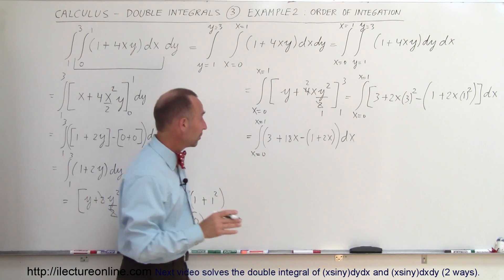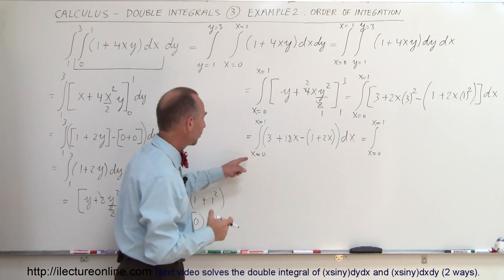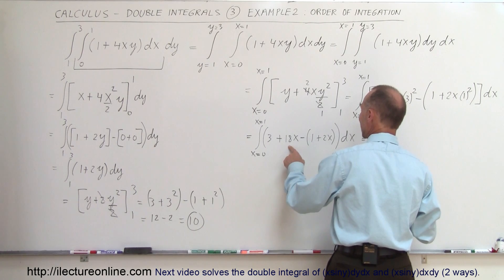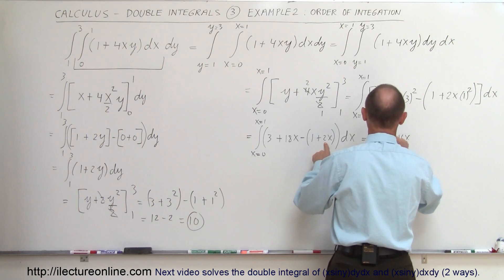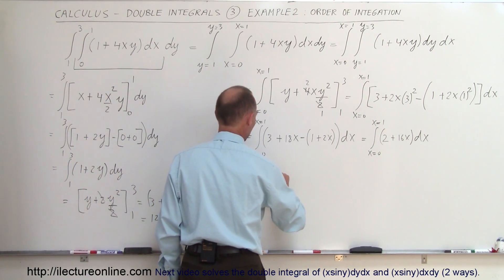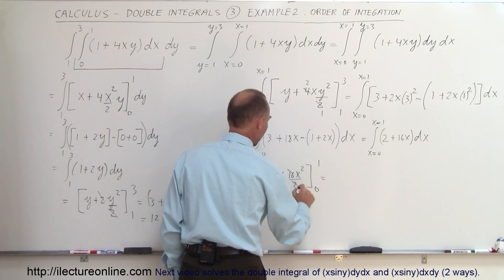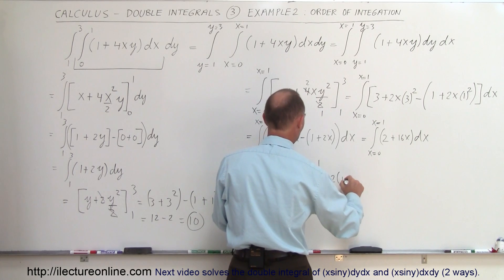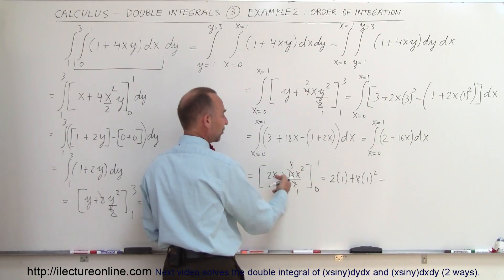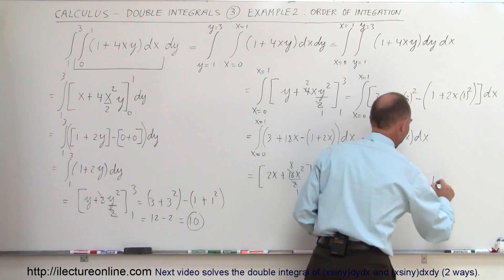Now we do the second integral. Integrating 2 plus 16x over x gives 2x plus 16x squared over 2, which simplifies to 2x plus 8x squared, evaluated from 0 to 1. Plugging in the upper limit: 2 times 1 plus 8 times 1 squared. Plugging in the lower limit gives 0 plus 0. So the answer is 2 plus 8, which is 10.